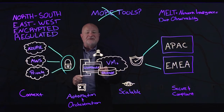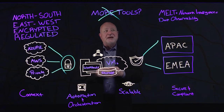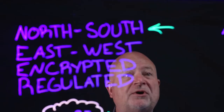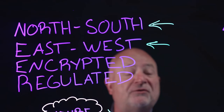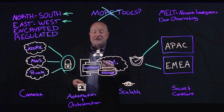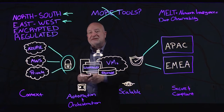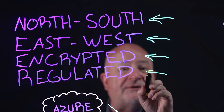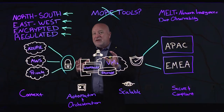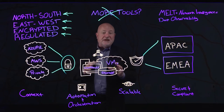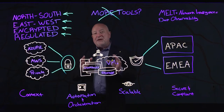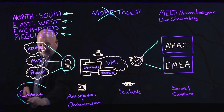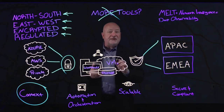With the Gigamon Deep Observability Pipeline, we have visibility into all of the traffic on the network — whether it's north-south coming on and off the network, whether it's east-west moving across the network, whether it's encrypted traffic or regulated traffic that you've got to report on externally. If you have visibility into all these different types of traffic, you can combine them, and from that combination you can derive context. And context can provide a lot of insights.